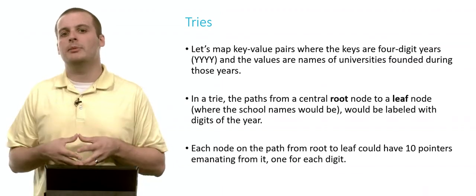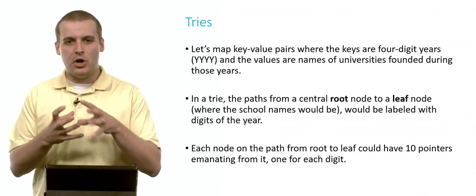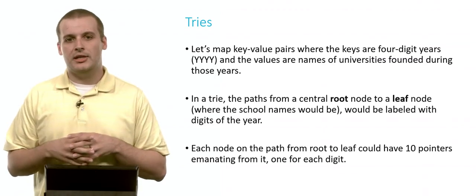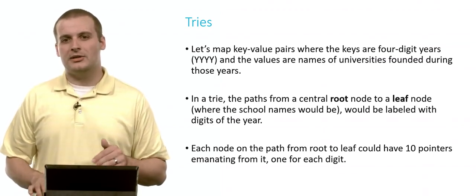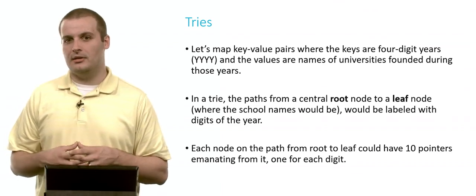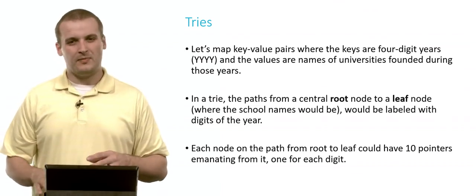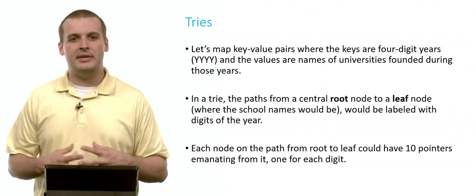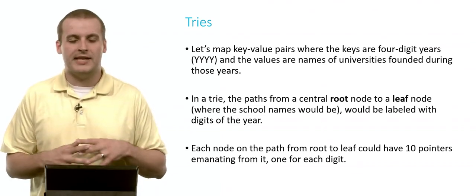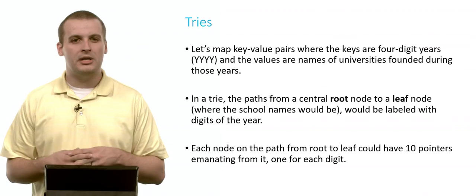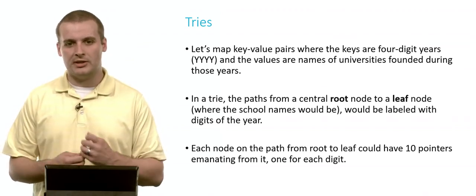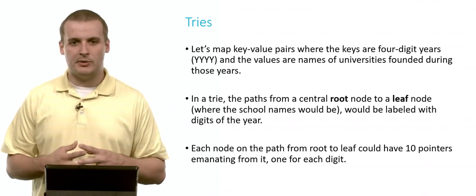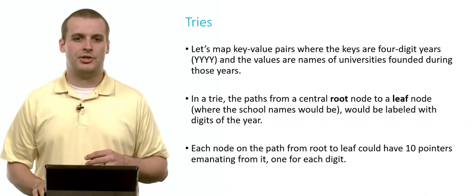That means that at every junction point, at every node in the middle, at every branch, there are 10 possible places that we can go. So there are 10 pointers from every location. And this is where tries can get a little bit intimidating for somebody who doesn't have a lot of experience in computer science before. But tries are really pretty awesome. And if you have the chance to work with them, they're really quite interesting data structures to work with.